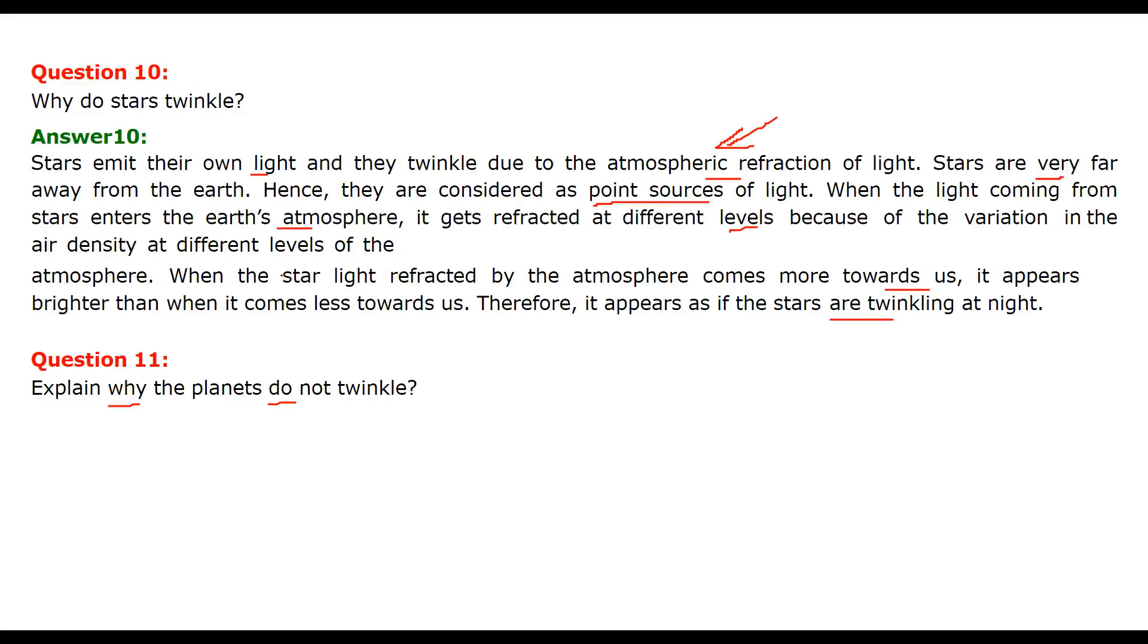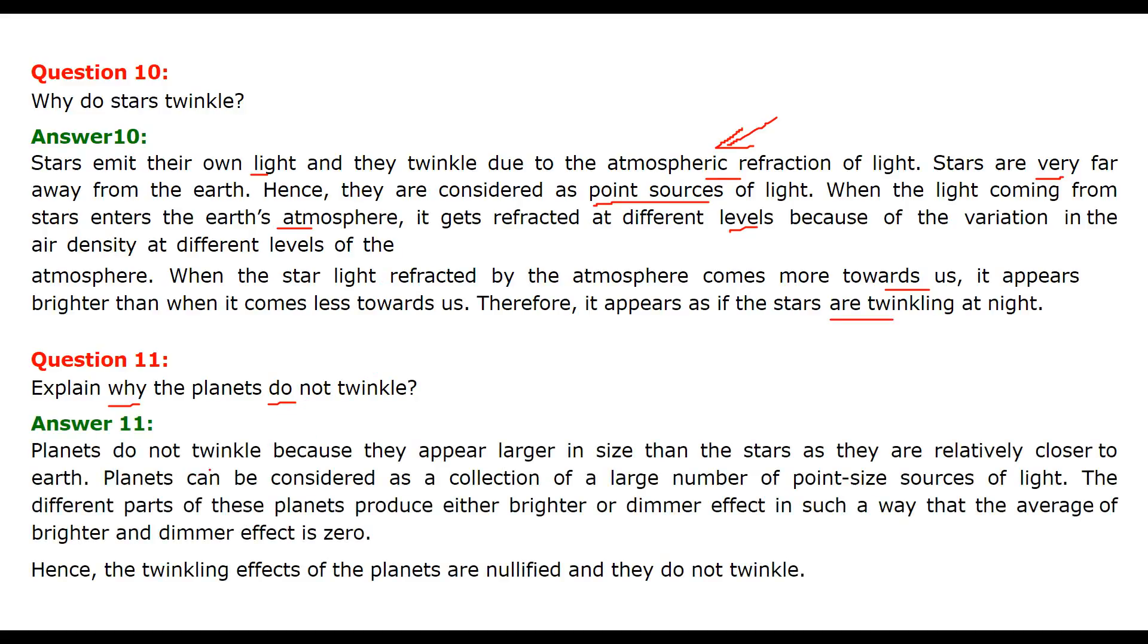Explain why the planets do not twinkle. Now the case is different here. Planets do not twinkle because they are larger in size as compared to stars and relatively closer to earth. So planets can be considered as a collection of large number of point sources of light. And the different parts of this planet produce either brighter light or dimmer light. And all in all, they nullify each other. Or if you take the average, some as minus, some as plus, the net effect is considered to be zero. Therefore, the twinkling effects of planets are nullified and they do not twinkle.